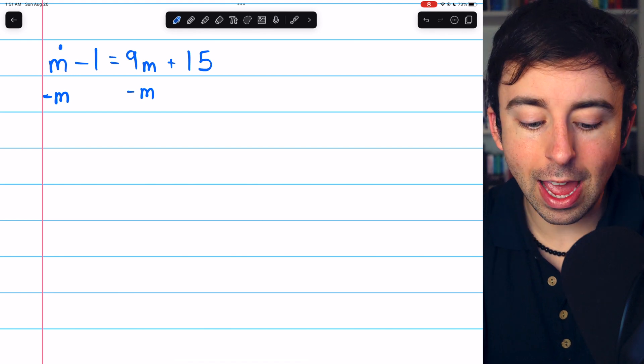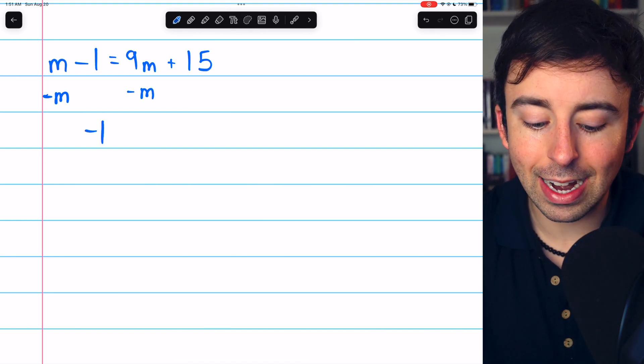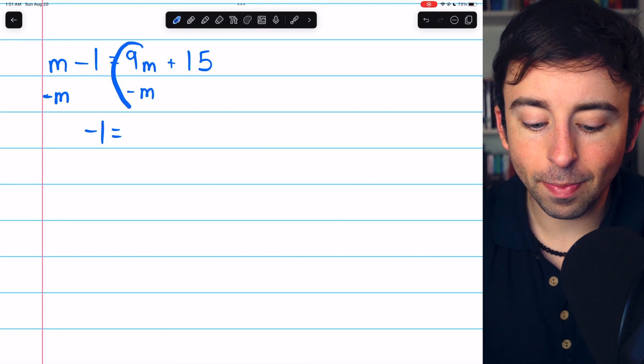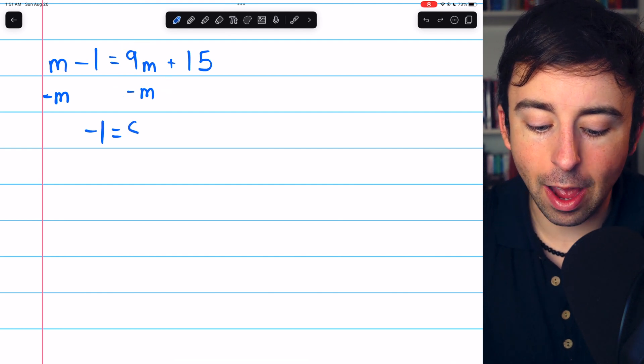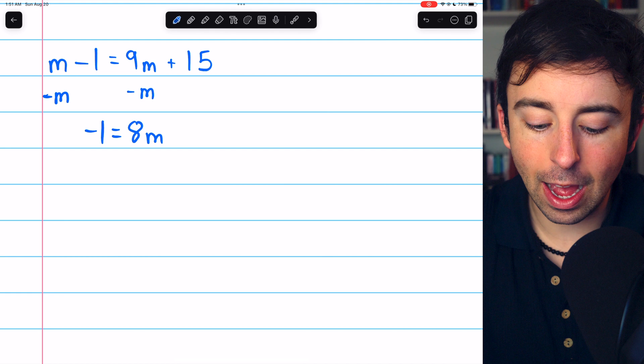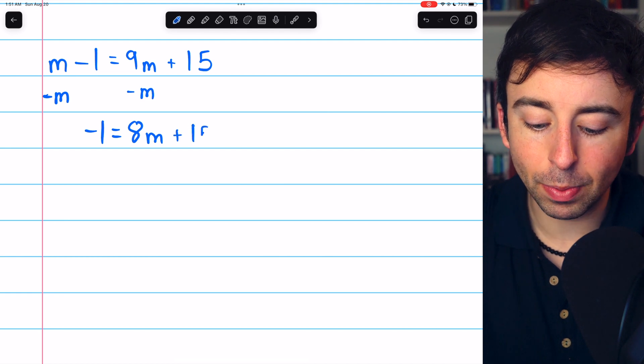On the left, the m and minus m cancel out, and we're just left with the negative 1. On the right, 9m minus m leaves 8m. And of course, we still have the plus 15.